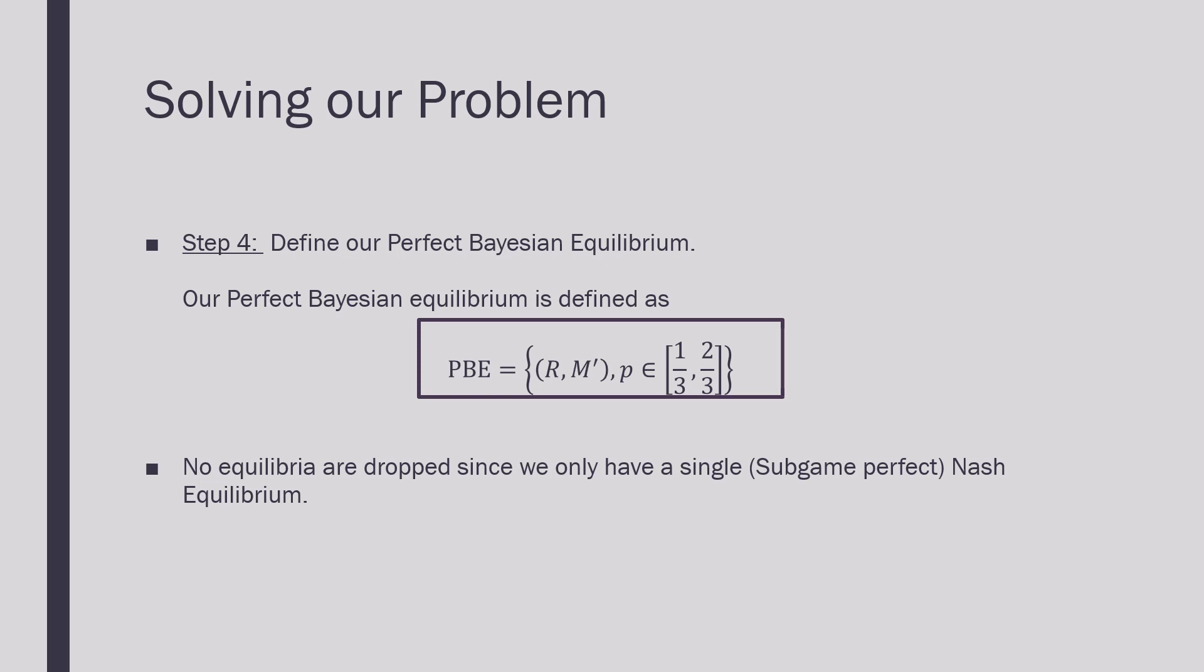And in this case, no equilibria has been dropped since we have a single Subgame Perfect Nash Equilibrium. So this is an example where we're solving for our Perfect Bayesian Equilibrium where it doesn't quite refine the number of equilibria that we have here.